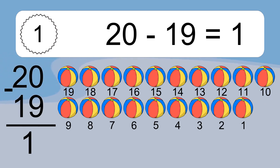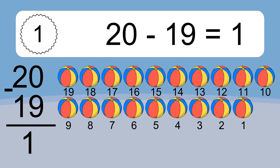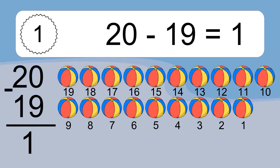Let's count it. 19, 18, 17, 16, 15, 14, 13, 12, 11, 10, 9, 8, 7, 6, 5, 4, 3, 2, 1.